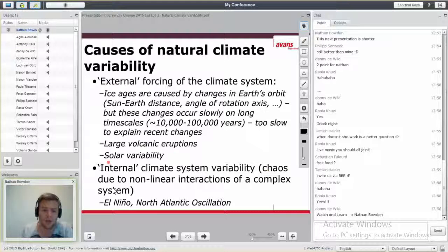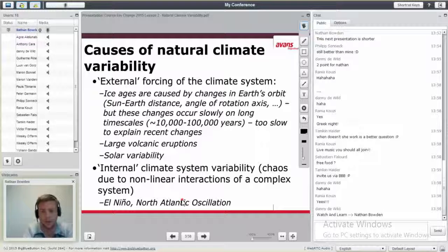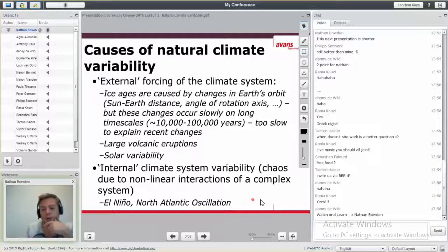And Krakatoa in Indonesia had a global impact. They've had lasting effects globally. But also internal climate system variabilities. To be honest, we're not sure why this happens. Specifically, we're talking about El Niño, La Niña. It's a cycle, and North Atlantic Oscillation.